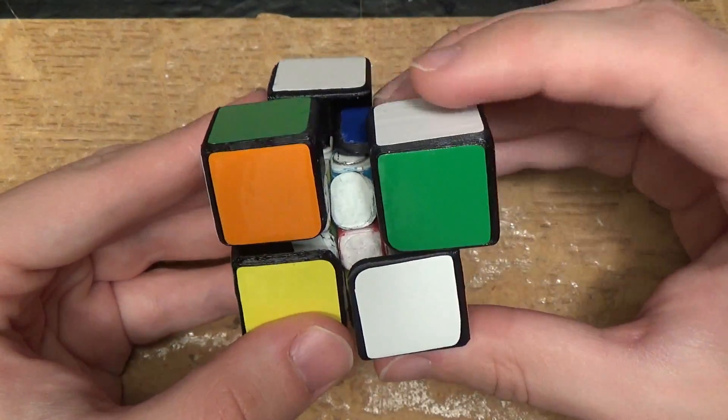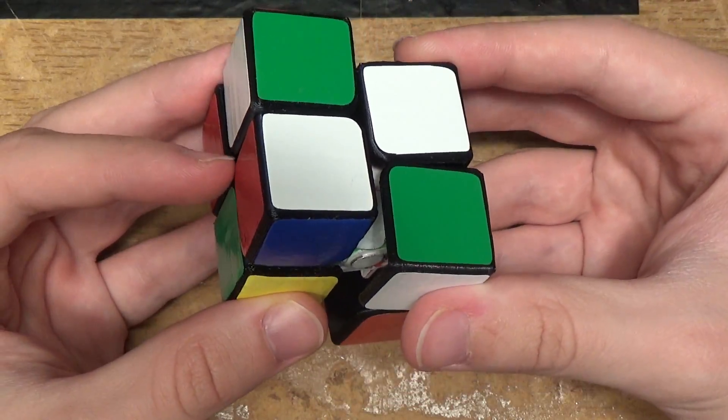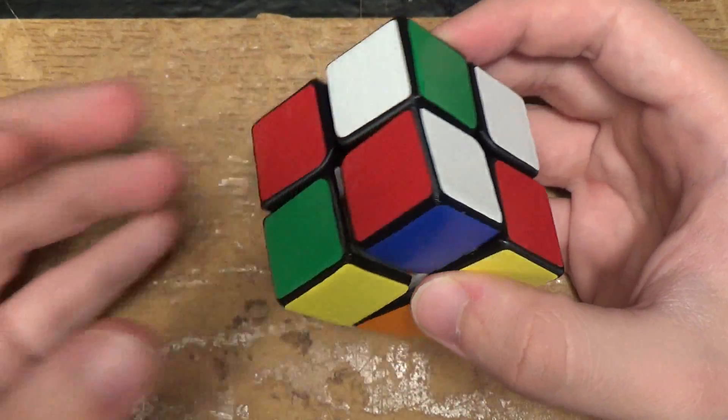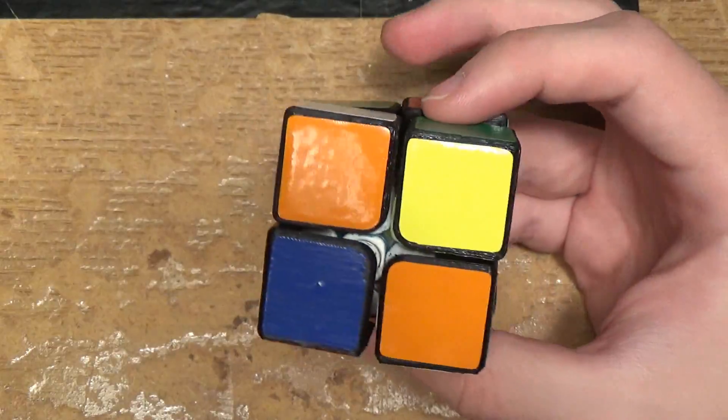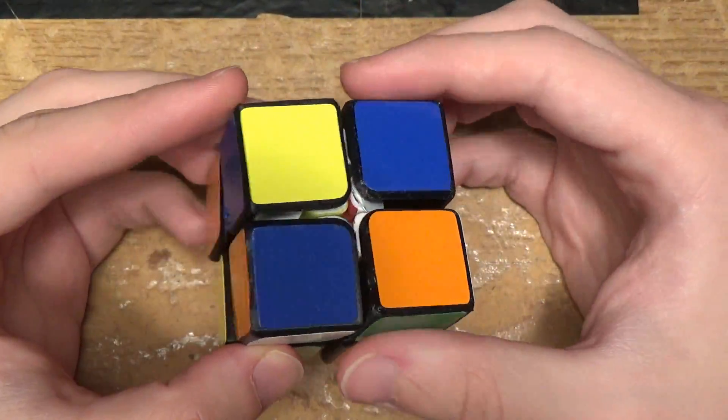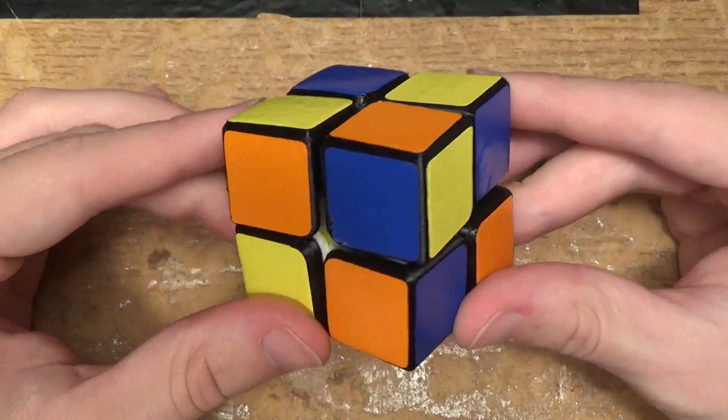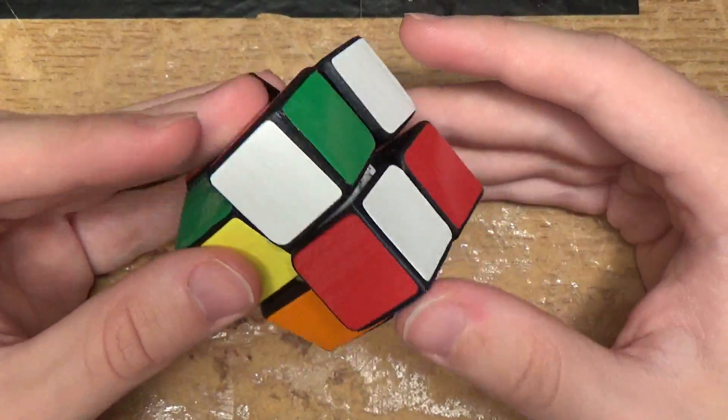I can do a u, I can do an r, u prime, and an r. And this is one of the cases that I mentioned earlier, where the puzzle is cubic, but not actually solved.